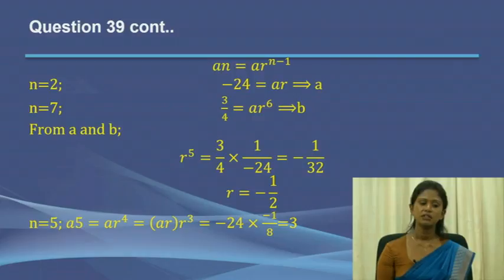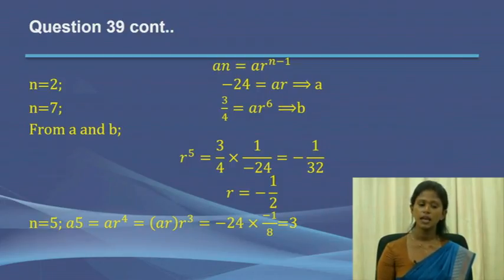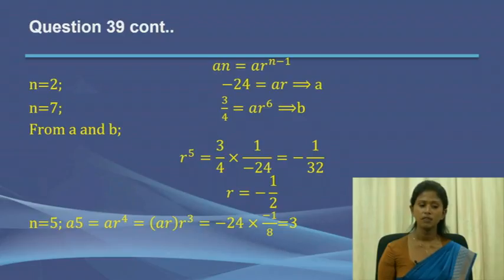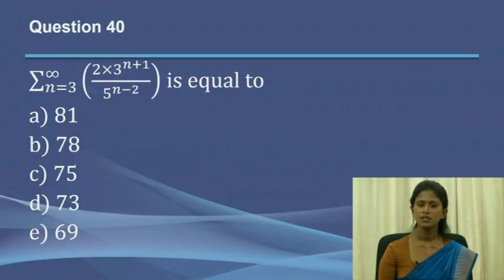The fifth term is a times r to the power 4, which can be rewritten as (a times r) times r cubed. Since from the second term we know that a times r equals minus 24, we substitute that value. With r equals minus 1/2, r cubed equals minus 1/8. So the fifth term equals minus 24 times (minus 1/8), which gives 3. The answer is 3.